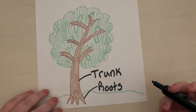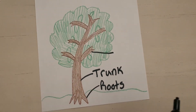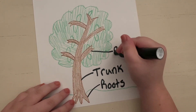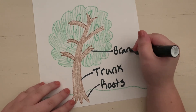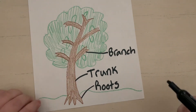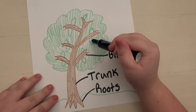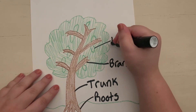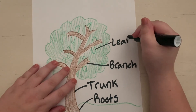The next part of the tree we're going to label are the branches. Draw a line from where the branches are and label it 'branch.' We just have one more thing to label — we're going to label a leaf on our tree. Find one of your leaves that you would like to label, draw a line, and label it 'leaf.'